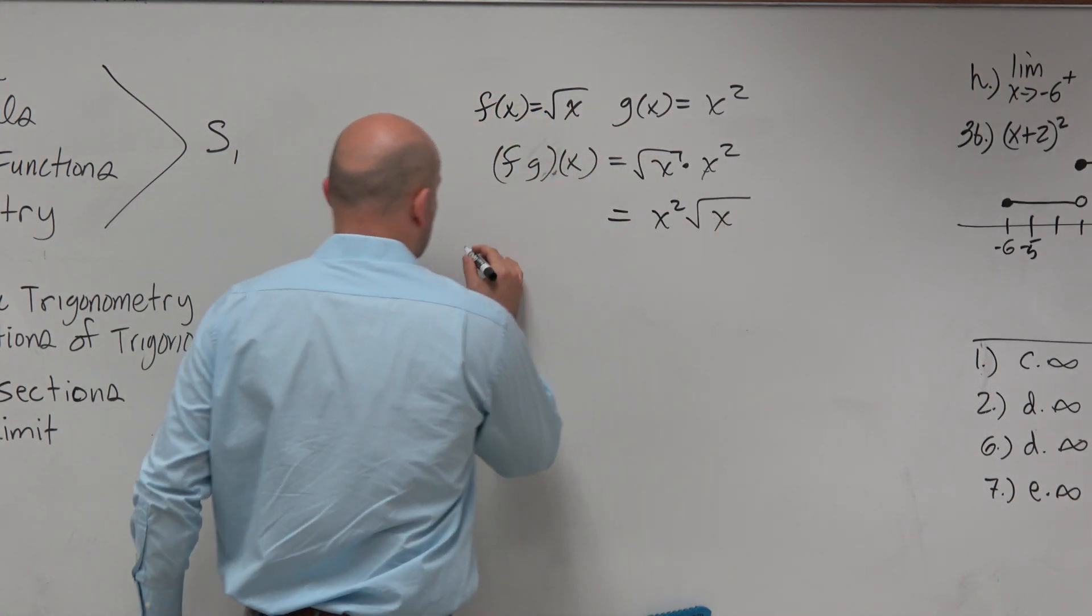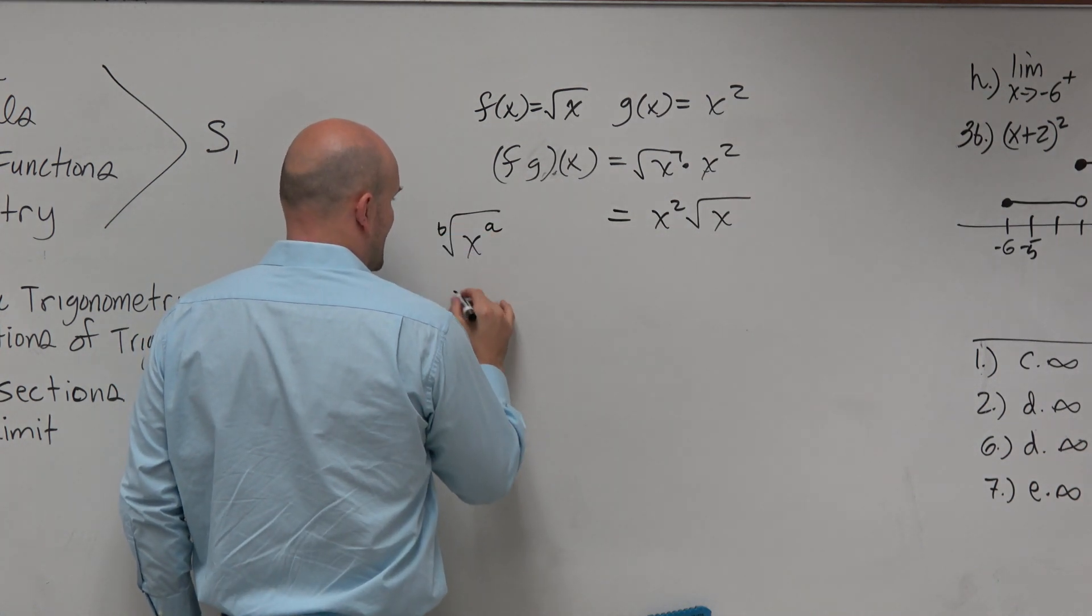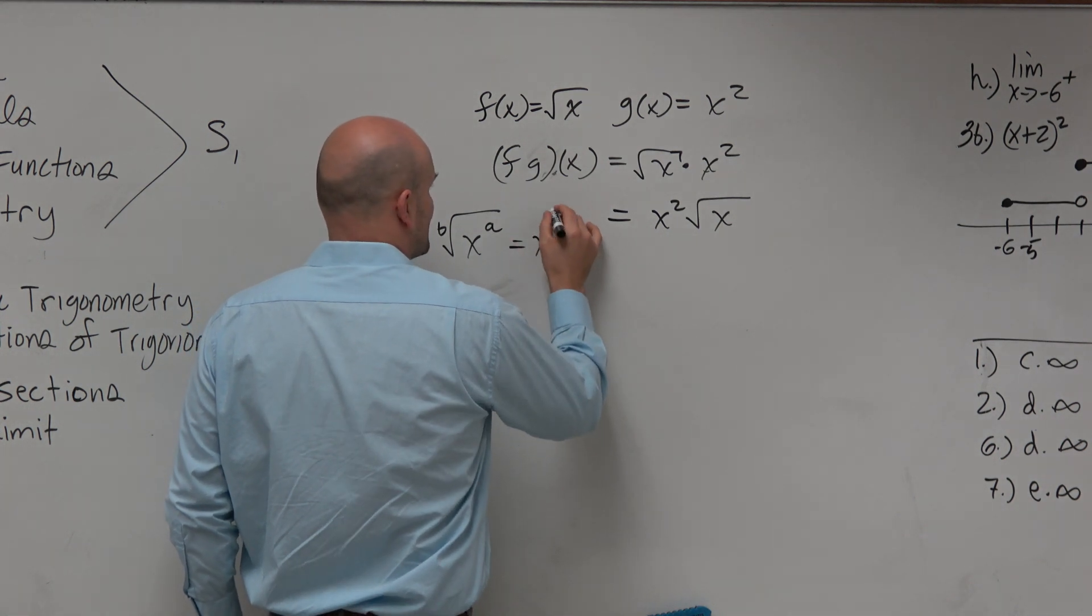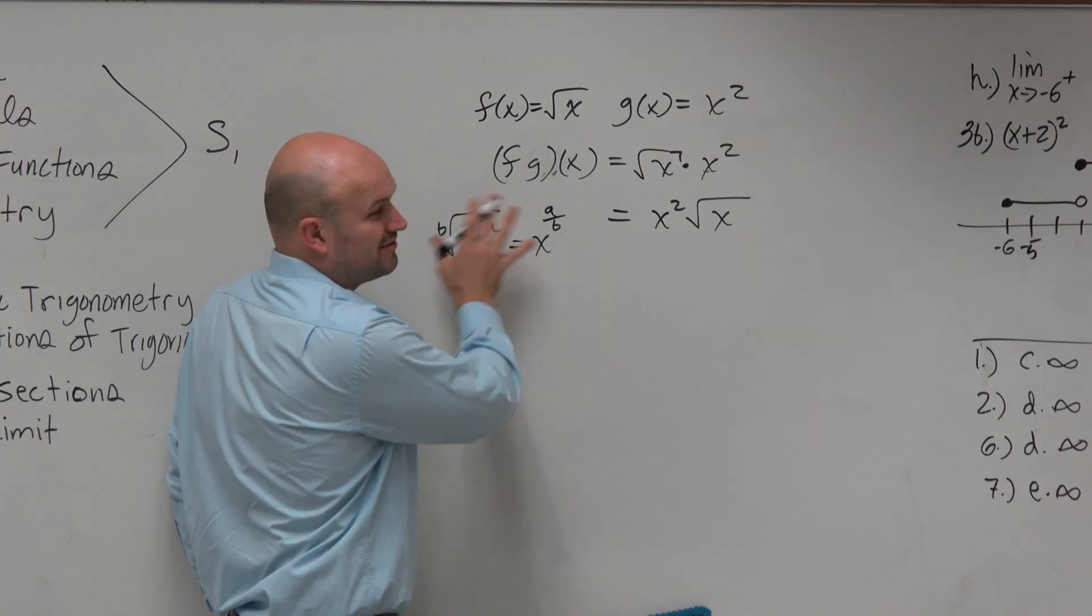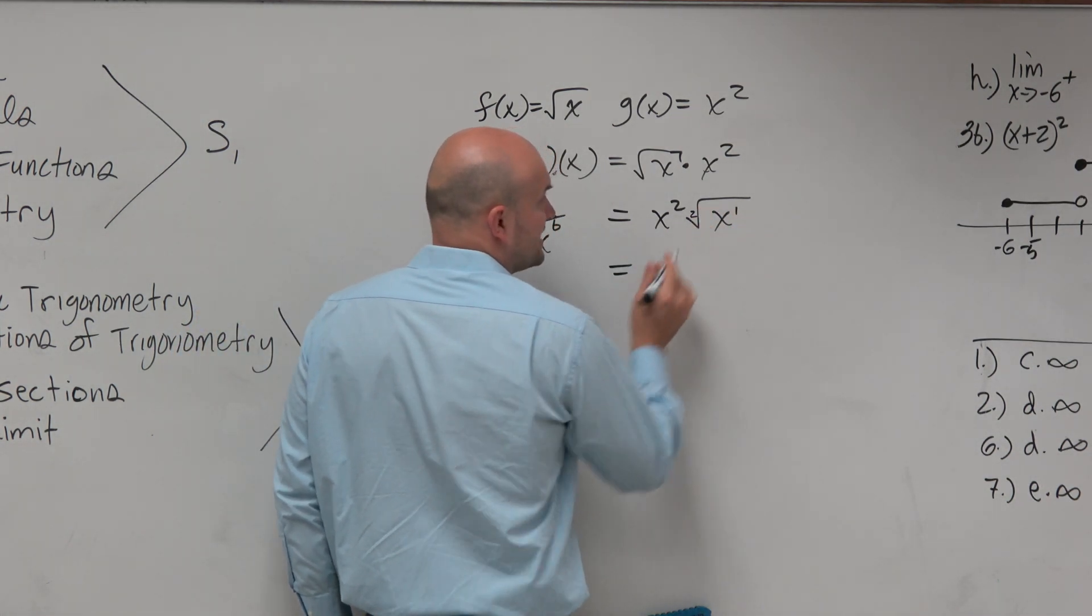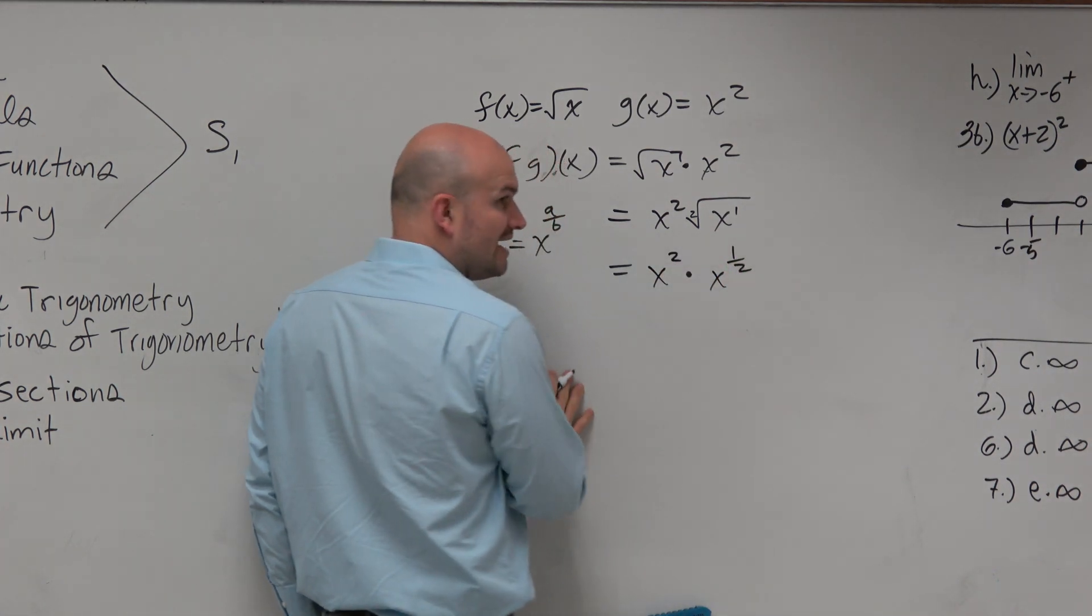I can rewrite any radical, if you guys remember, as equal to x to the a over b. Right? That was in algebra 2. We didn't really spend too much time on it. But hopefully you guys recognize this as a 1 with an index of 2. So this is really x squared times x to the 1 half.